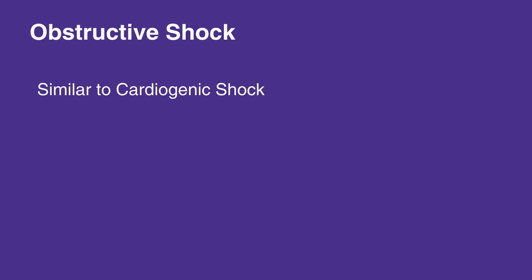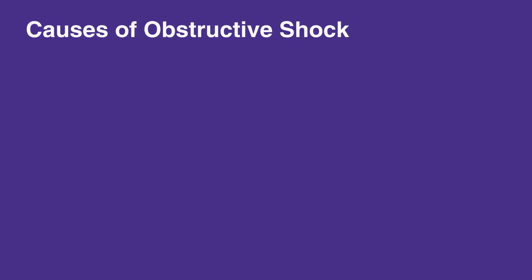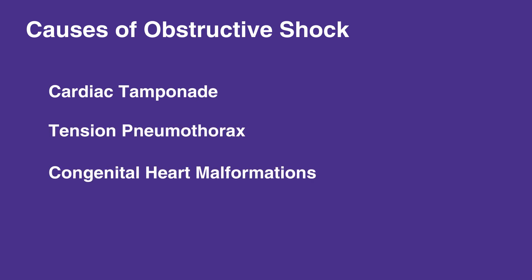Obstructive shock is similar to cardiogenic shock in that impaired heart function is the primary abnormality. In cardiogenic shock, the contractility is impaired, but in obstructive shock, the heart is prevented from contracting appropriately. Common causes of obstructive shock are cardiac tamponade, tension pneumothorax, congenital heart malformations, and pulmonary embolism.